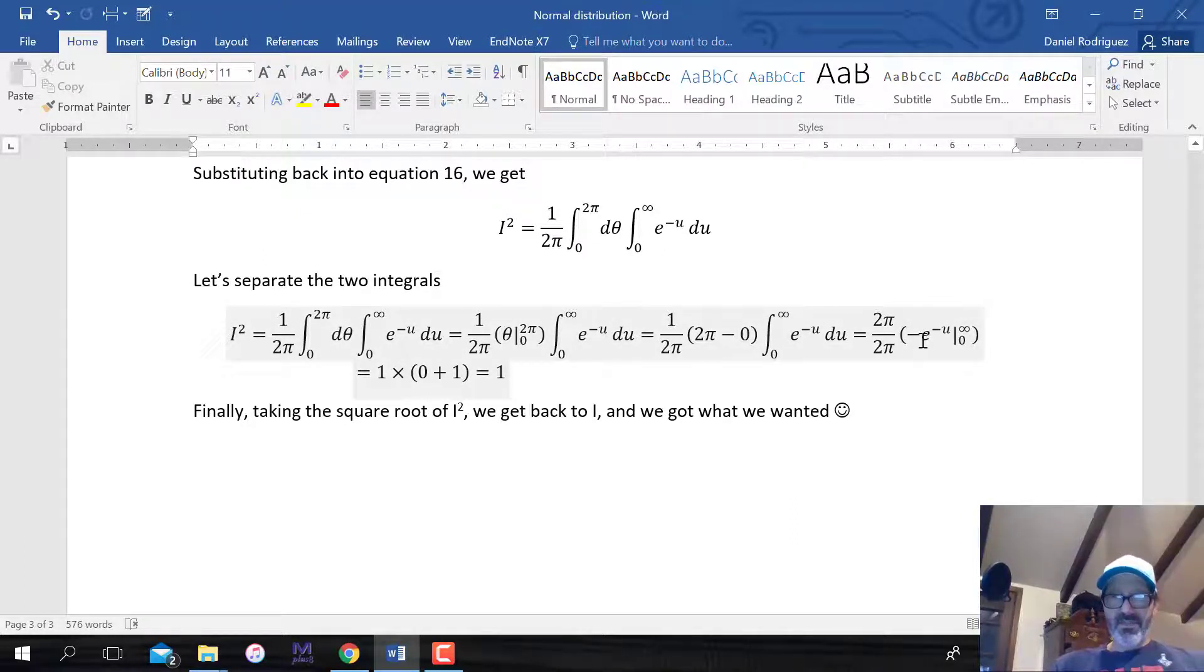When it's infinity, this is going to approach zero, because this is the same as minus one over e to the u. As that approaches infinity, that whole function will approach zero because the denominator is getting huge. And then the last part, e to the zero is going to be one. So we're going to have zero plus one is one, and this is equal to one.